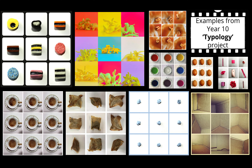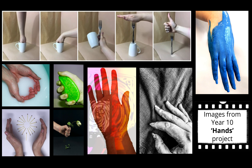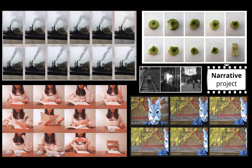These examples here are images from a year 10 mini skills project exploring the theme of hands, looking at composition and different lighting techniques. We also explore the idea of narrative and look at photographs which have a meaning or which tell a story — these images are by students and show sequences of images.